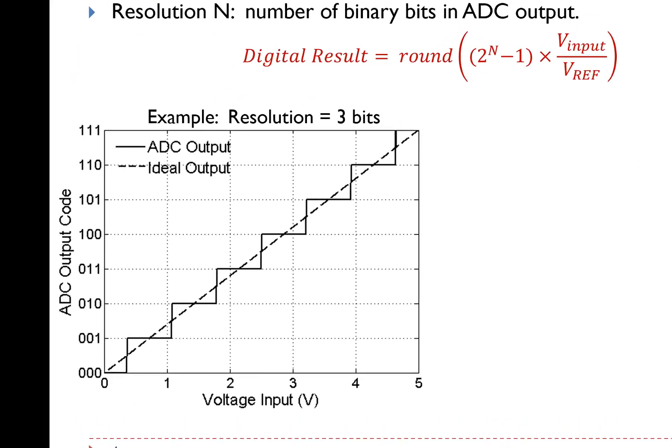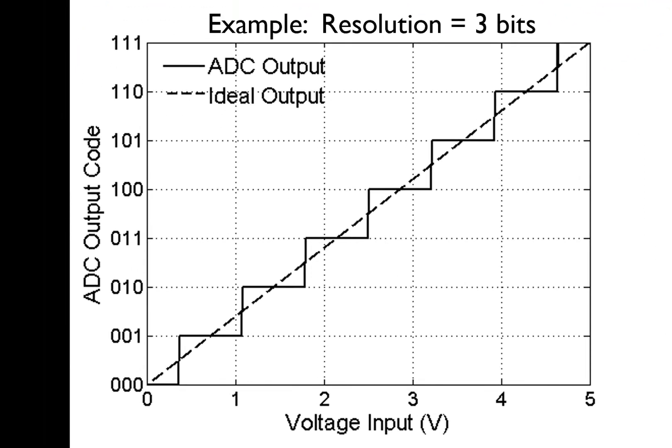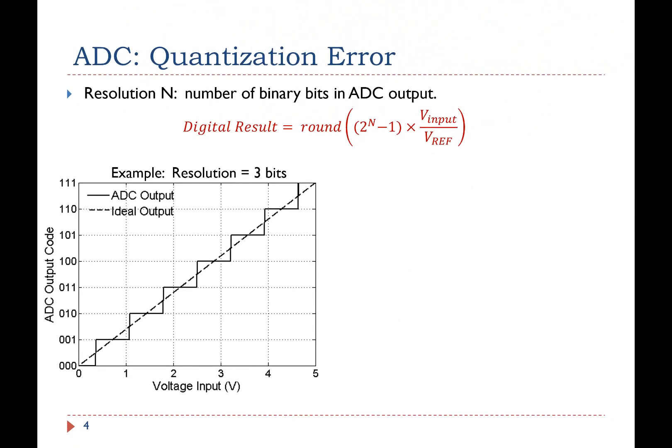For example, a 3-bit ADC provides a total of 8 different quantization levels, ranging from 000 to 111. The smallest change in the input voltage required to guarantee a change in the output is expressed in terms of the least significant bit voltage, LSB.